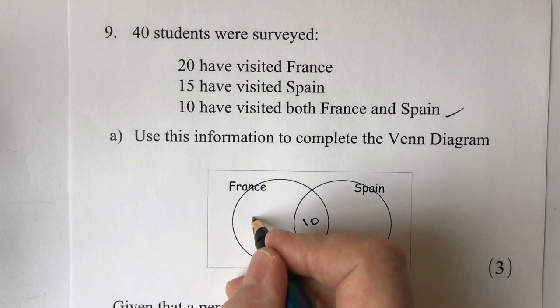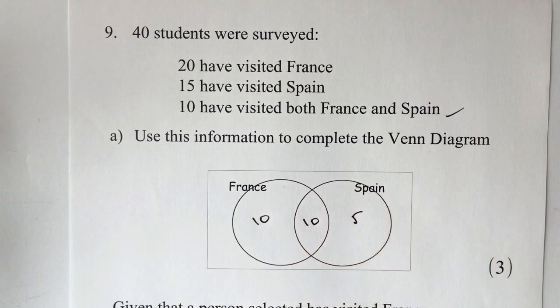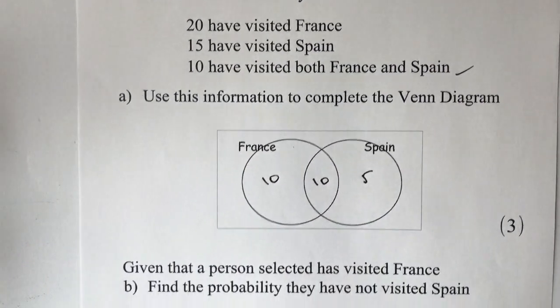Same again with Spain. You've got 15 have visited Spain, 10 of which have also been to France, so therefore we can say that 5 have been to Spain only. So fairly straightforward, quite easy question, this particular one. Okay, so let's have a look then at part B.